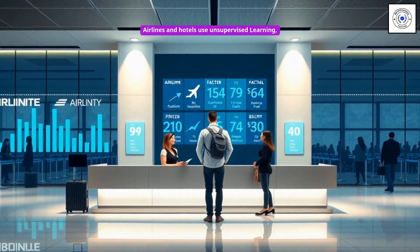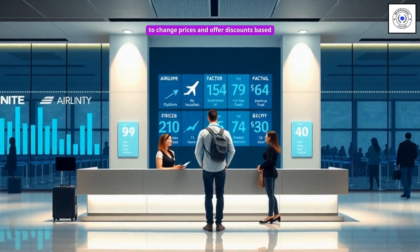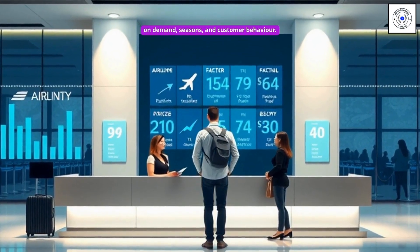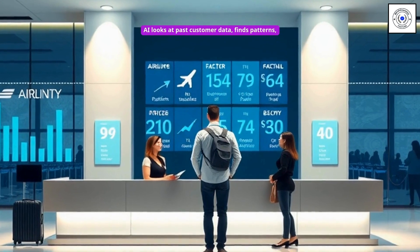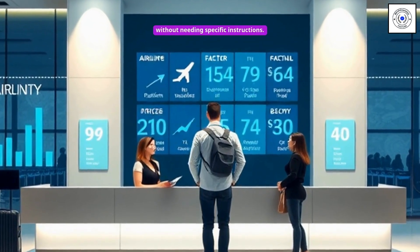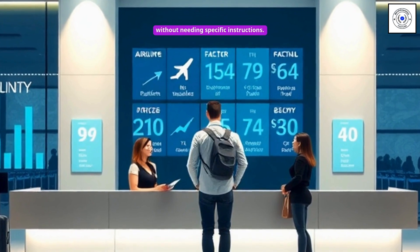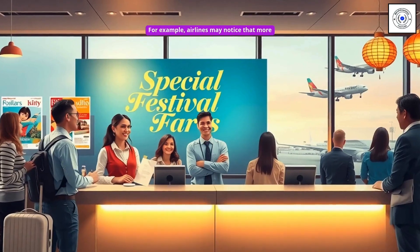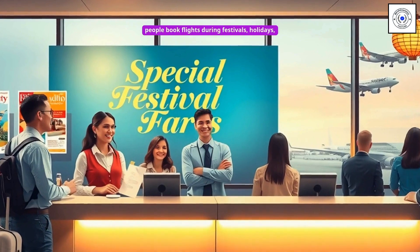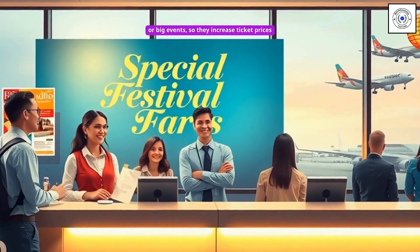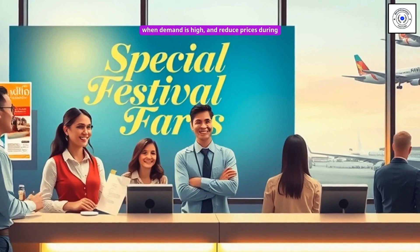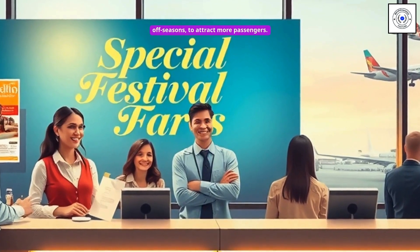Airlines and hotels use unsupervised learning to change prices and offer discounts based on demand, seasons, and customer behavior. AI looks at past customer data, finds patterns, and adjusts prices automatically without needing specific instructions. For example, airlines may notice that more people book flights during festivals, holidays, or big events, so they increase ticket prices when demand is high and reduce prices during off-seasons to attract more passengers.